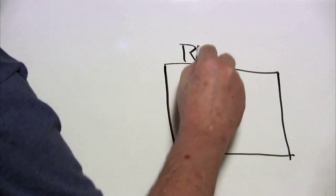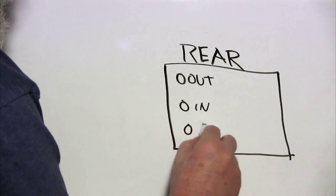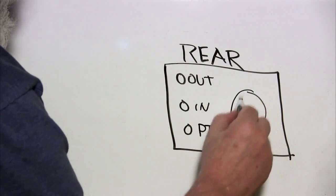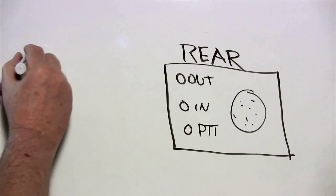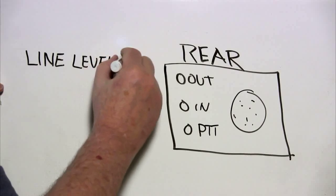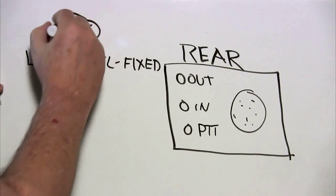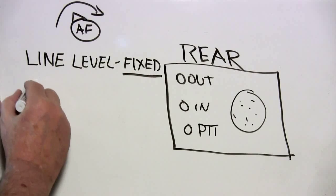Many radios have connectors on the rear of the radio as well: an audio out, an audio in, and a push to talk. If you don't have separate connectors, these signals may be available on a multi-pin connector. Now the audio output is typically line level, and it's fixed. So as you vary the AF volume on the radio, the level stays fixed and does not change.